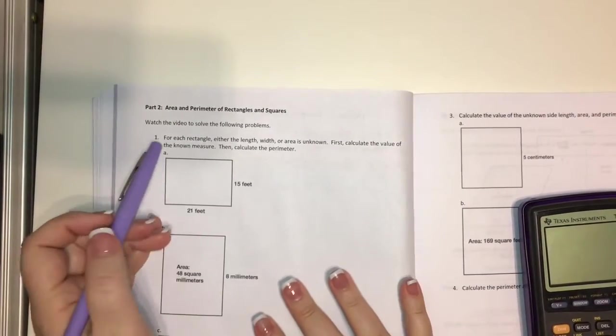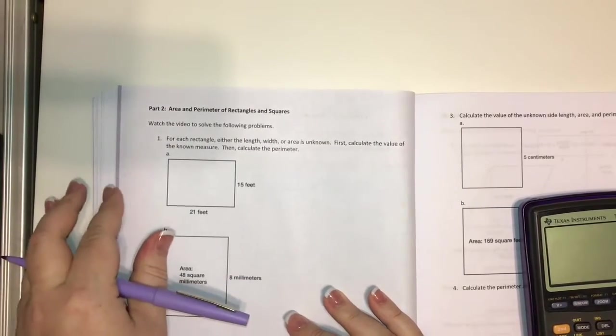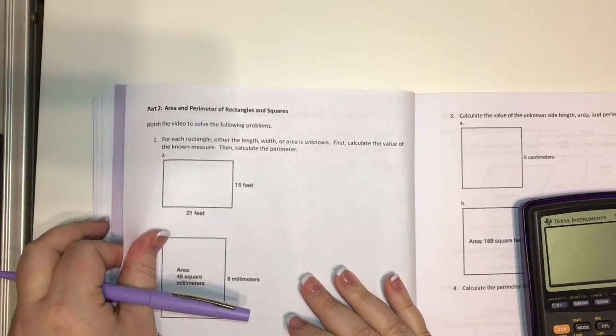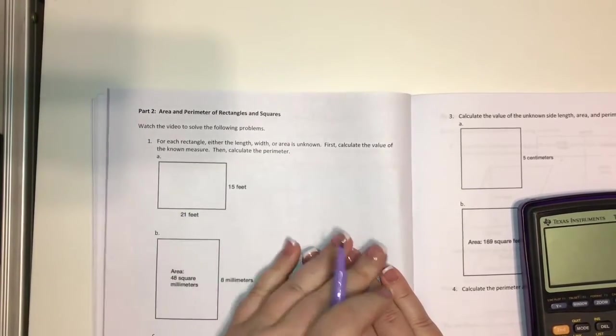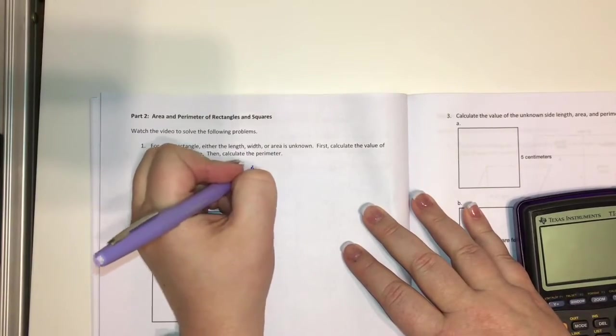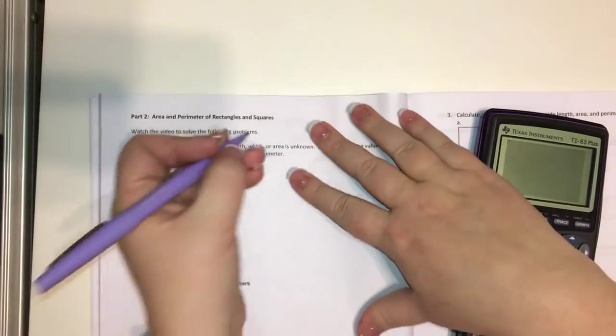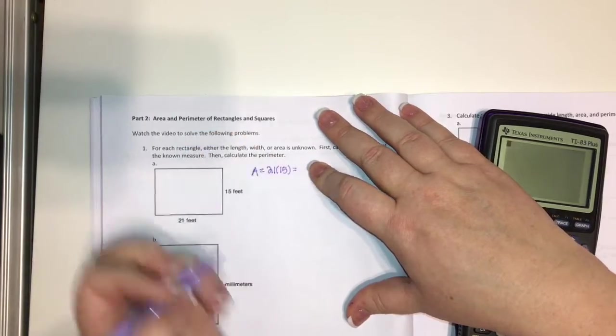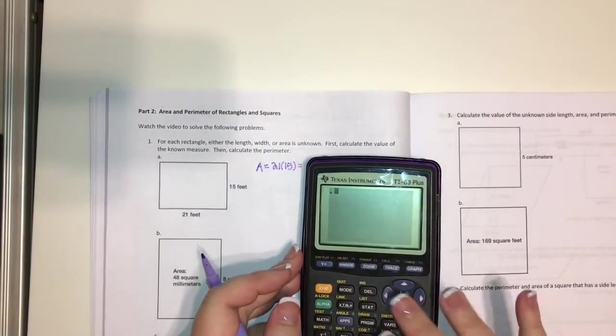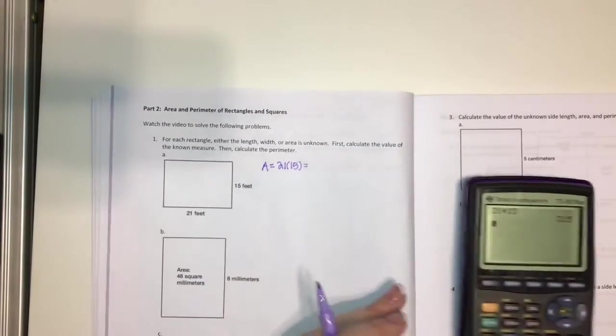So the first problem, for each rectangle, either the length, width, or area is unknown. First, calculate the value of the unknown measure, and then calculate the perimeter. So here we've got our length and our width. We need to find the area. So we just multiply those two numbers together. We're going to do 21 times 15. And when we multiply 21 times 15, we get 315.